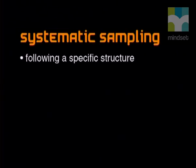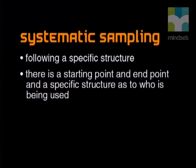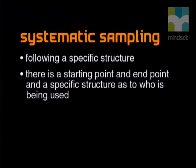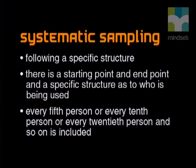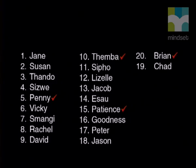What is a random sampling technique? It's a technique that makes the sampling random — for example, drawing from a hat or using a computerized random selection tool to determine whether a person should be used in the sample. So if we used this method to find out about the waiters, they would have no control over which customers would be surveyed. Exactly. The next method is called systematic sampling. This method involves following a specific structure — there's a starting point and an end point, and a specific structure as to who is included. An example is selecting every fifth, tenth, or twentieth person. That would also ensure the sample covers the whole population quite evenly.